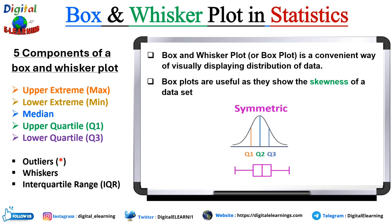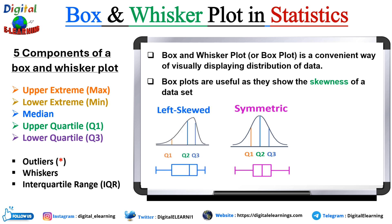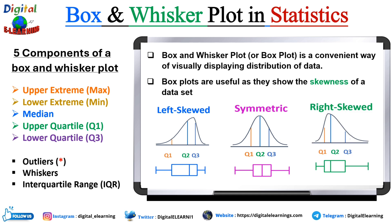When the median is in the middle of the box and the whiskers are about the same length on both sides, the distribution is symmetric. If it is left-skewed or negatively skewed, the left whisker is longer than the right whisker. This means there are some lower values pushing the distribution tail to the left, and the median line inside the box is closer to the right side of the box.